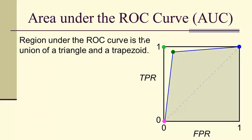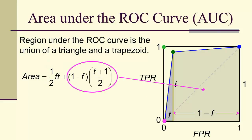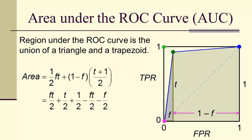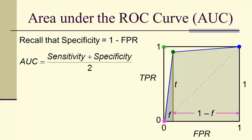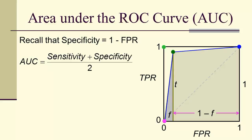The area under the receiver operating characteristic is a union of a triangle and a trapezoid. The area of the triangle is one half F times T, and the area of the trapezoid is the average of the two sides times (1 minus F). Expanding and simplifying gives T over 2 plus (1 minus F) over 2. Since (1 minus F) is the specificity and T is the sensitivity, the area under the curve is the average of the sensitivity and the specificity.